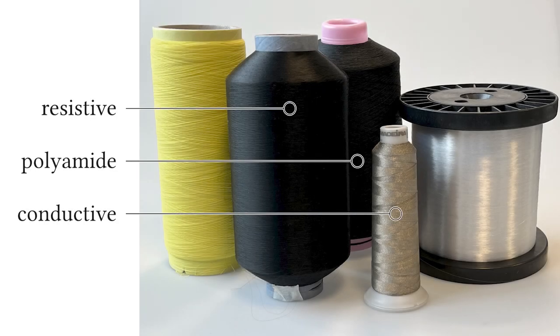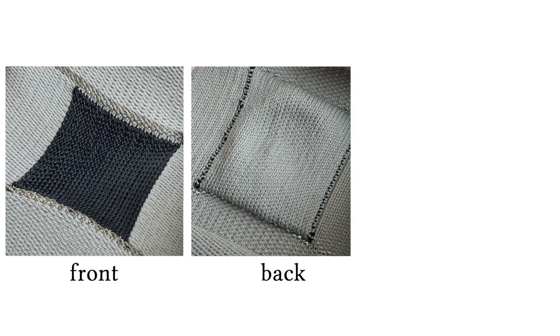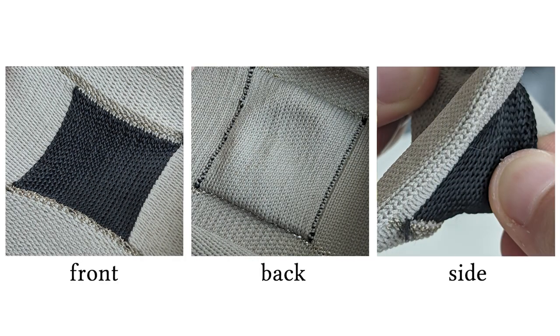Our knitted strain sensor layout requires resistive and conductive materials as well as base yarn which provides the surrounding knit structure for embedding the sensor.